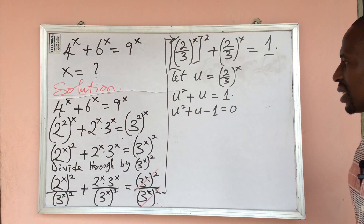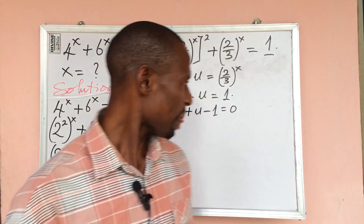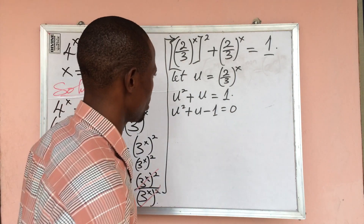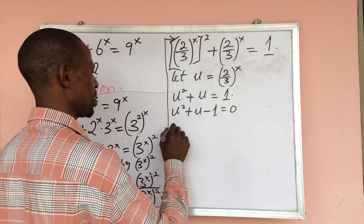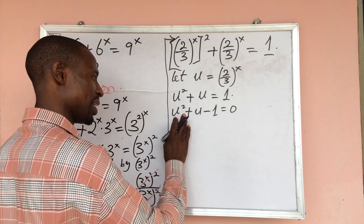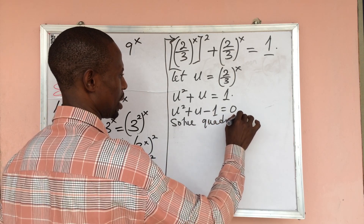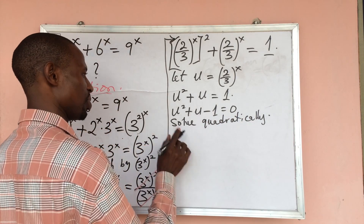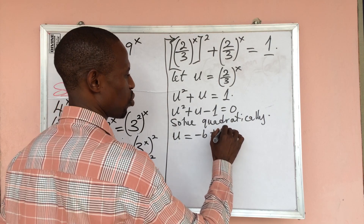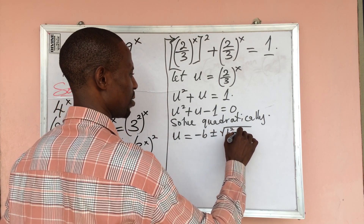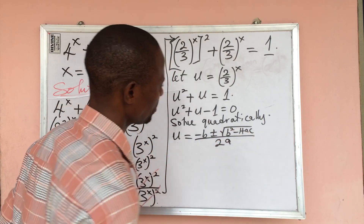We can see this is a quadratic equation. We cannot use factorization, so we use the quadratic formula method. The quadratic formula states: u equals minus b, plus or minus the square root of b squared minus 4ac, all over 2a. From our equation u squared plus u minus 1 equals 0: a is the coefficient of u squared which is 1, b is the coefficient of u which is 1, and c is the constant which is minus 1.